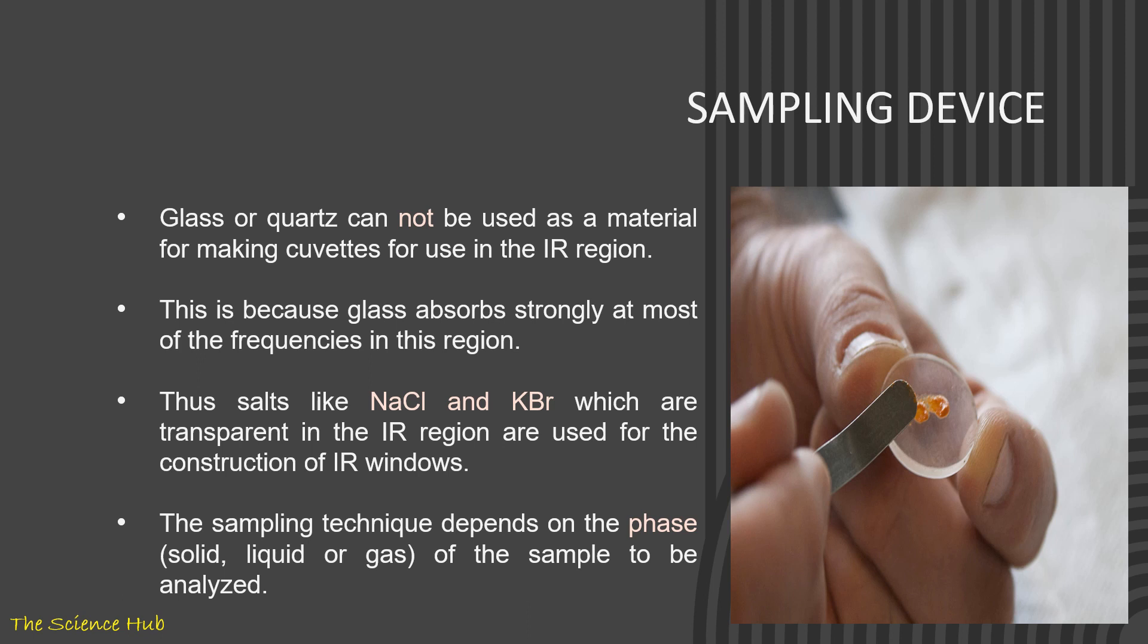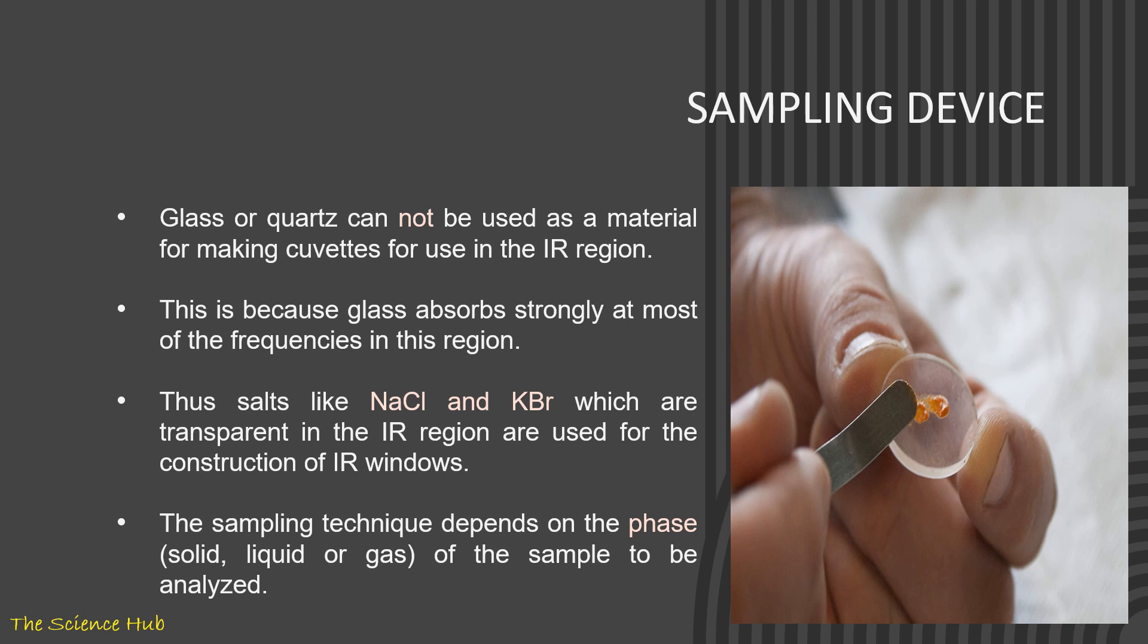Detectors: there are various detectors used in IR spectroscopy. Several detectors which I mentioned here: thermal transducer which works on thermal effect. Some examples of thermal transducers are thermocouple and bolometer. Next is pyroelectric transducer that is used in FTIR and photoconducting transducers which work on semiconductors.